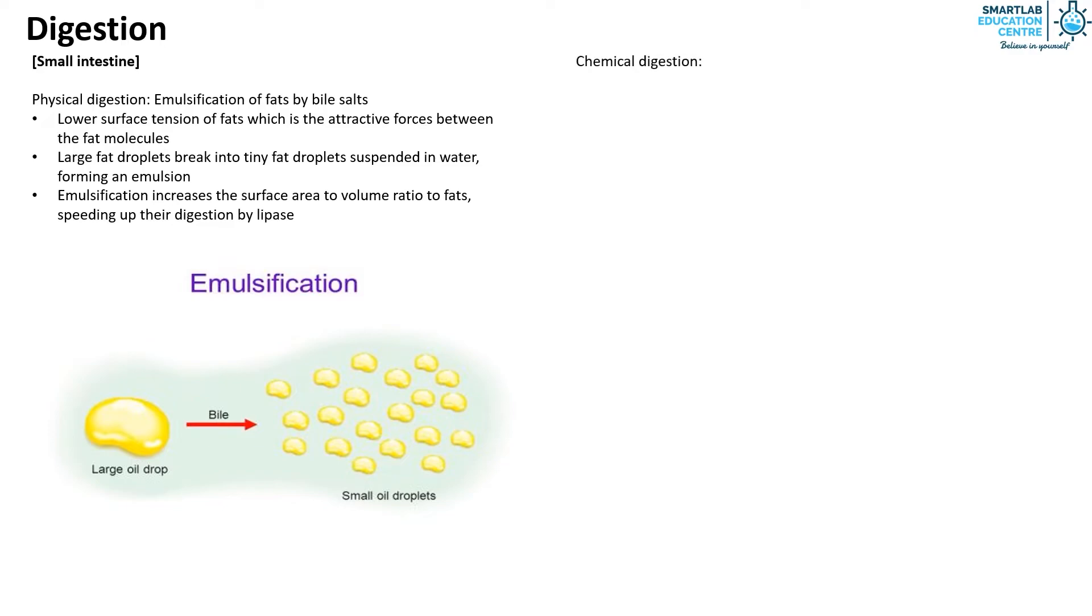The chemical digestion occurring is as follows. Note that some enzymes come from the small intestine while some come from pancreatic juice made by the pancreas. Starch is hydrolyzed to maltose by pancreatic amylase. Maltose is then hydrolyzed to two glucose molecules by intestinal maltase. Lactose is hydrolyzed to glucose and galactose by intestinal lactase. Sucrose is hydrolyzed to glucose and fructose by intestinal sucrase.